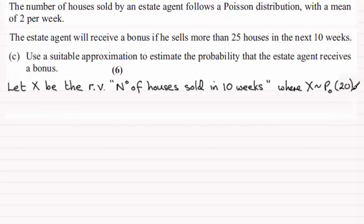Now we've got to work out the probability that the estate agent sells more than 25 houses, the probability that X is greater than 25. But we've got to use an approximation, and because the mean is large, 20 in this case, that approximation is towards a normal approximation.